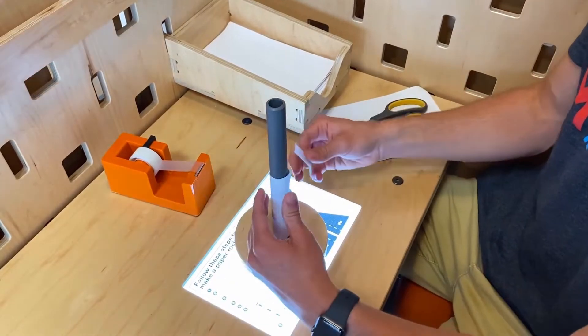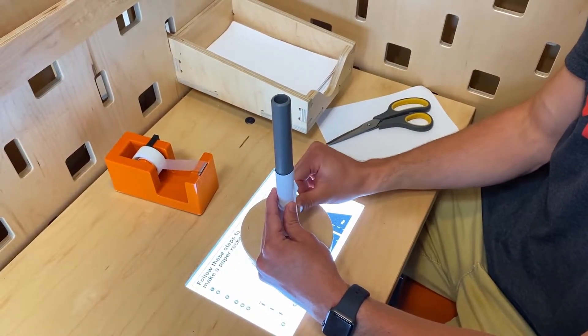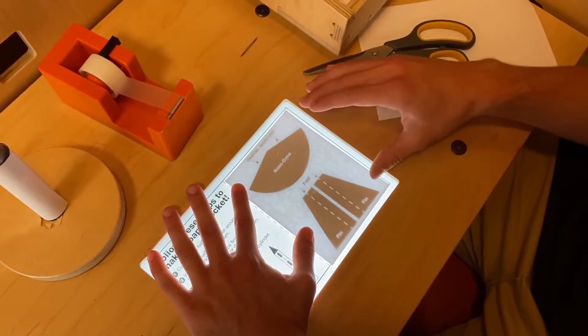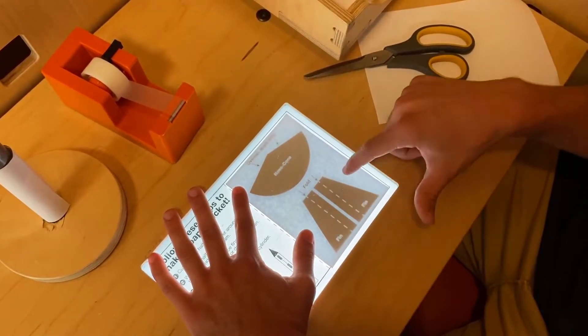The next step is to grab a piece of tape and tape down the side of your rocket. Take your paper, lay it over the light table, and trace out the nose cone as well as the fins.